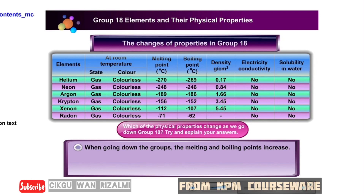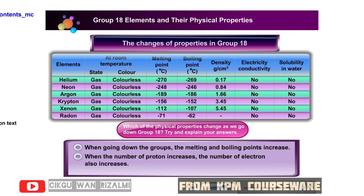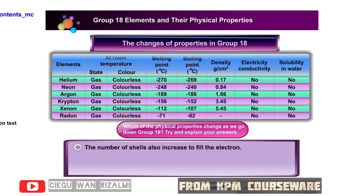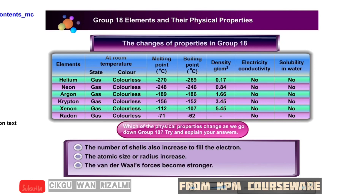When going down the group, the melting and boiling points increase. This is because when the number of protons increases, the number of electrons also increases. This results in the number of shells also increasing. The atomic size or radius will also increase, and the van der Waals forces become stronger. Thus, more heat energy is needed to overcome these forces.